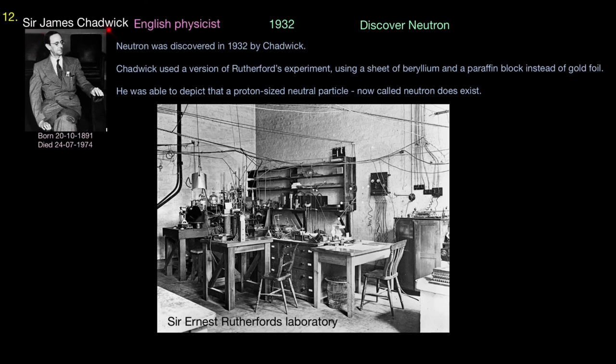The last person to look at is Sir James Chadwick, an English physicist. In 1932, Chadwick discovered neutron. Chadwick used a version of Rutherford's experiment using a sheet of beryllium and a paraffin block instead of gold foil. He was able to depict that a proton sized neutral particle, now called a neutron, does exist.